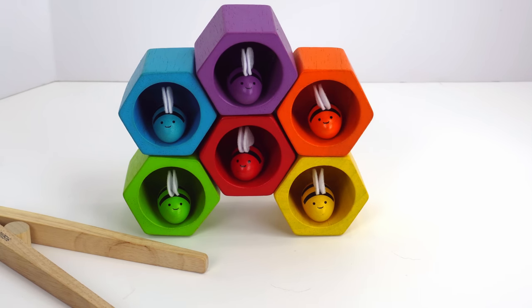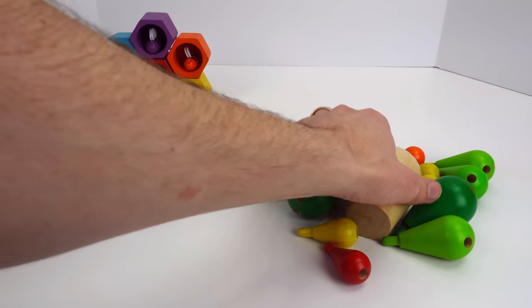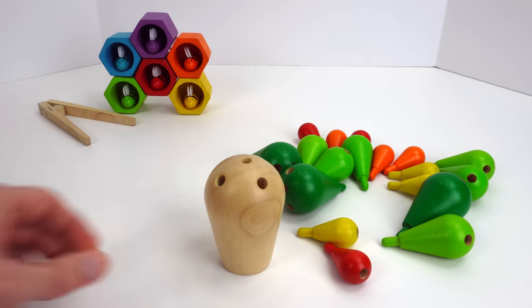Alright, now that we have our bees safely in their beehive, how about we plant them a cactus so they can get some nectar to make honey? Let's start with the stalk of the cactus.